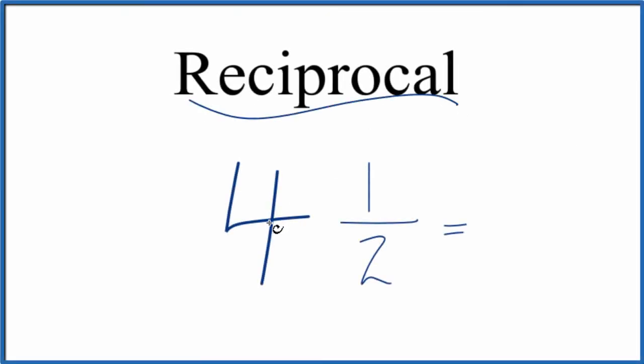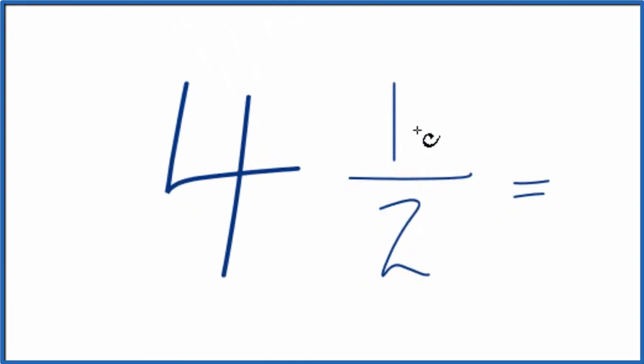Here's how you find the reciprocal for 4 and 1 half. So to find the reciprocal we have right here, this is a mixed fraction. We have a whole number and then a fraction.